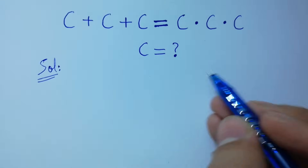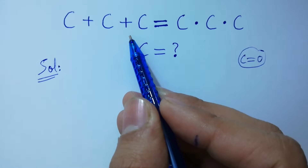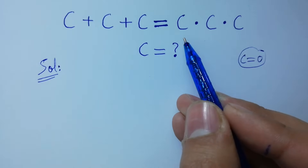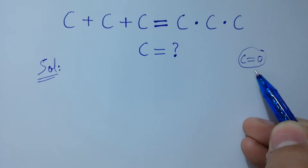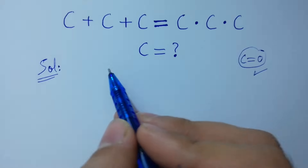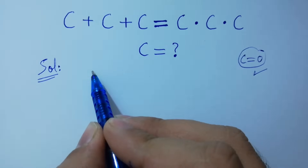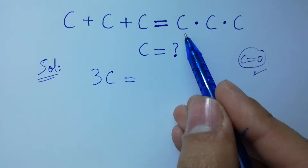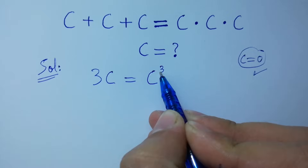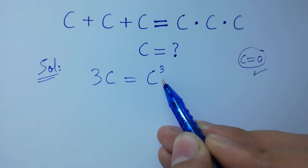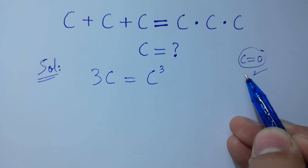If we put c equal to 0, you can see 0 plus 0 plus 0 which is 0, and on the right hand side 0 times 0 times 0 which is 0. So 0 equals 0, which shows that c equal to 0 is one solution. But c plus c plus c on the left hand side is 3c, and on the right hand side c times c times c gives us c cubed. Since this has power 3, it has three solutions — one solution is c equal to 0, and there are two more.